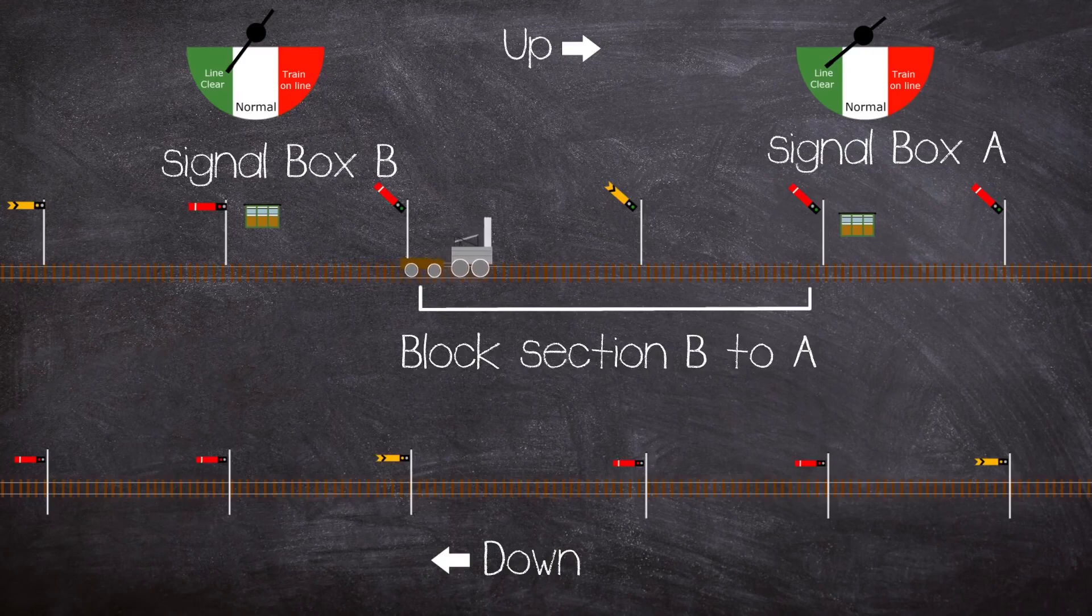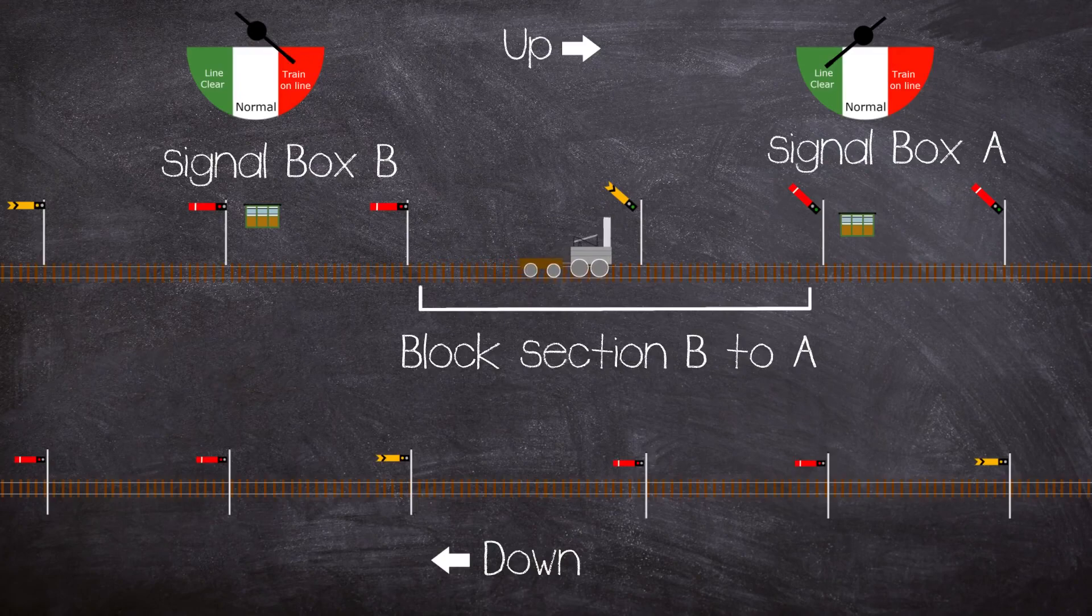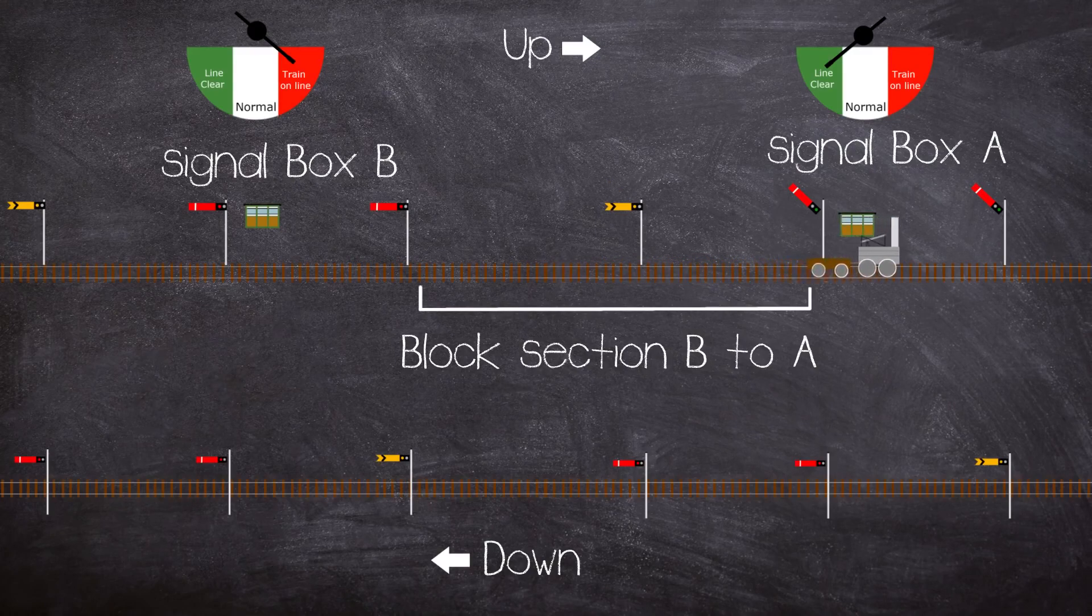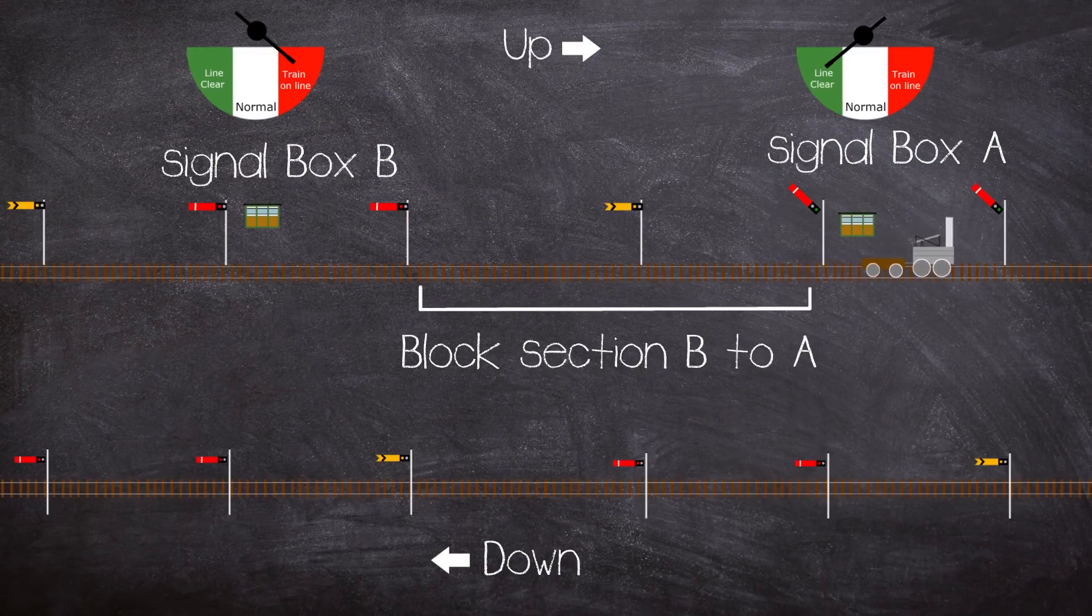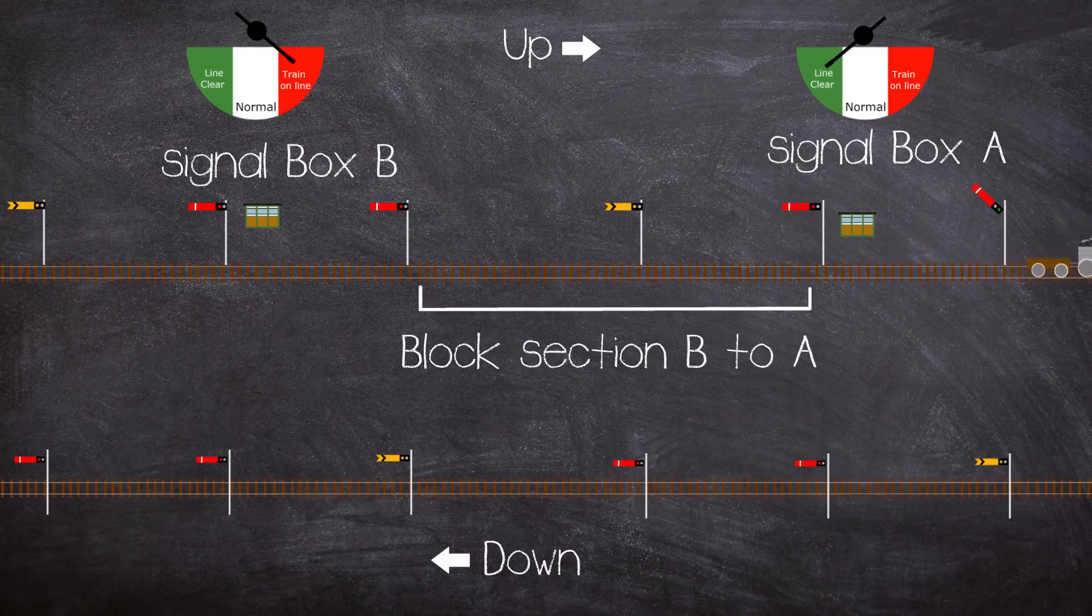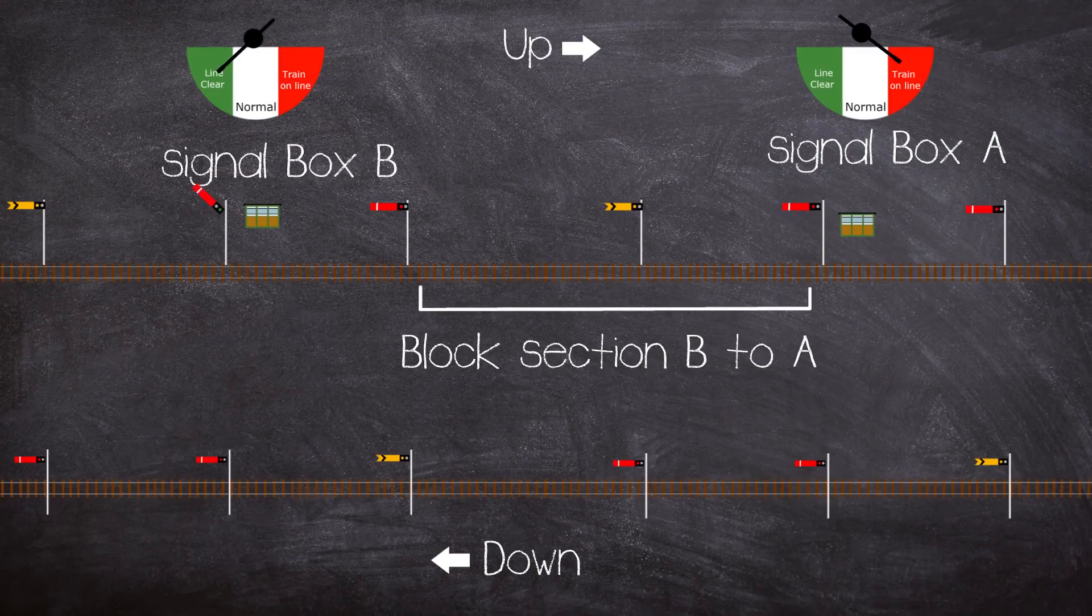The train will approach the distance signal for box A's home signal. If all the signals for this block controlled by box A are showing a proceed, then the distance signal will be in its off position, and in our example you can see it is. Once the train has passed the home signal for box A and the signaller has observed the full length of the train past the signal box and they have seen the train's tail lamp, indicating that no part of the train remains in the section to the rear, the signaller will then replace the home signal to danger and indicate to box B that the train is out of the section. Then B can accept another train and the process can carry on.